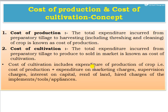Cost of cultivation includes the expenditure of crop production — that is, cost of production — plus expenditure on marketing charges, supervision charges, interest on capital, rent on the land, and hire charges of implements, tools, and appliances.